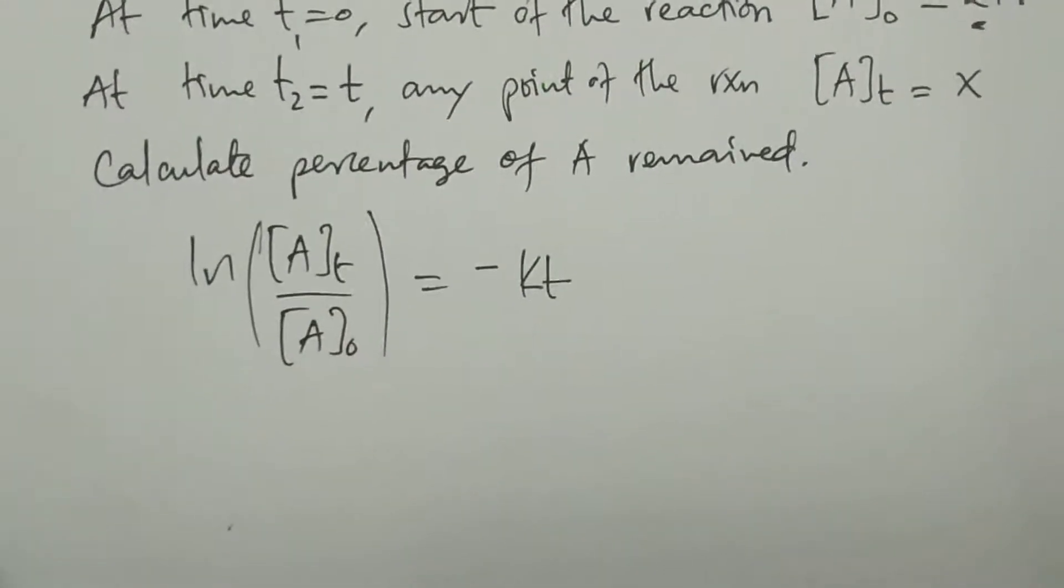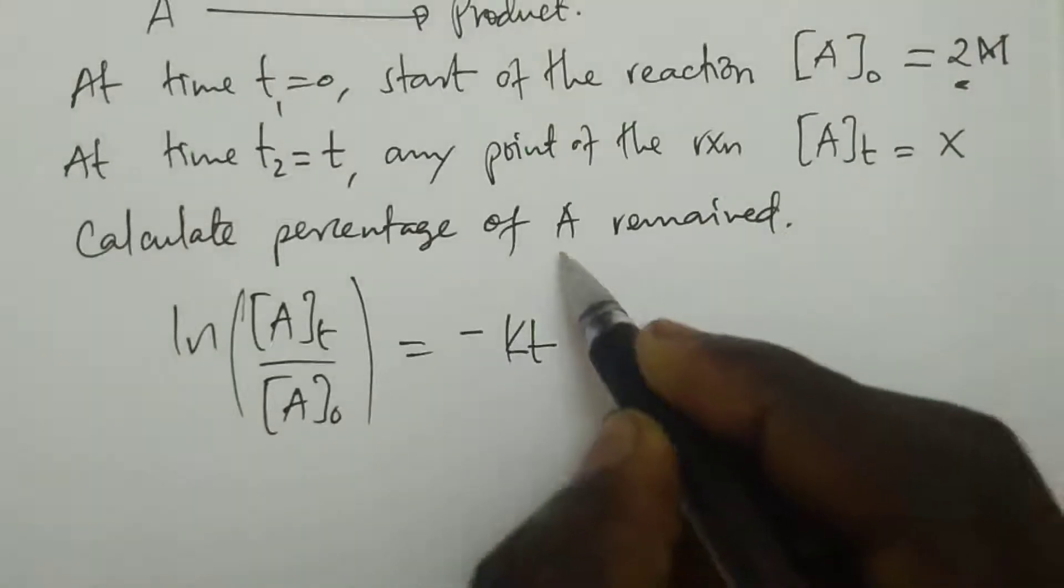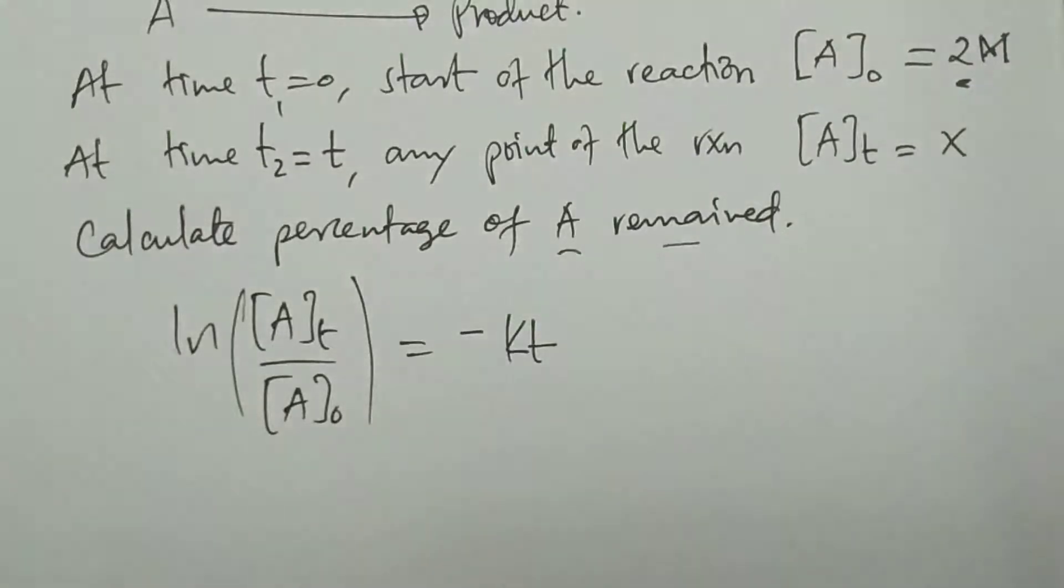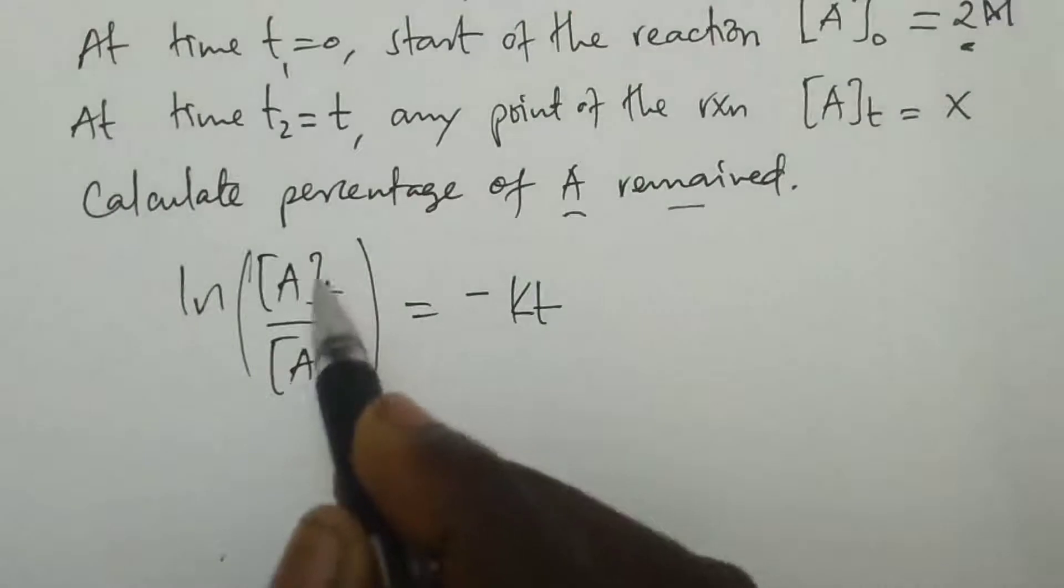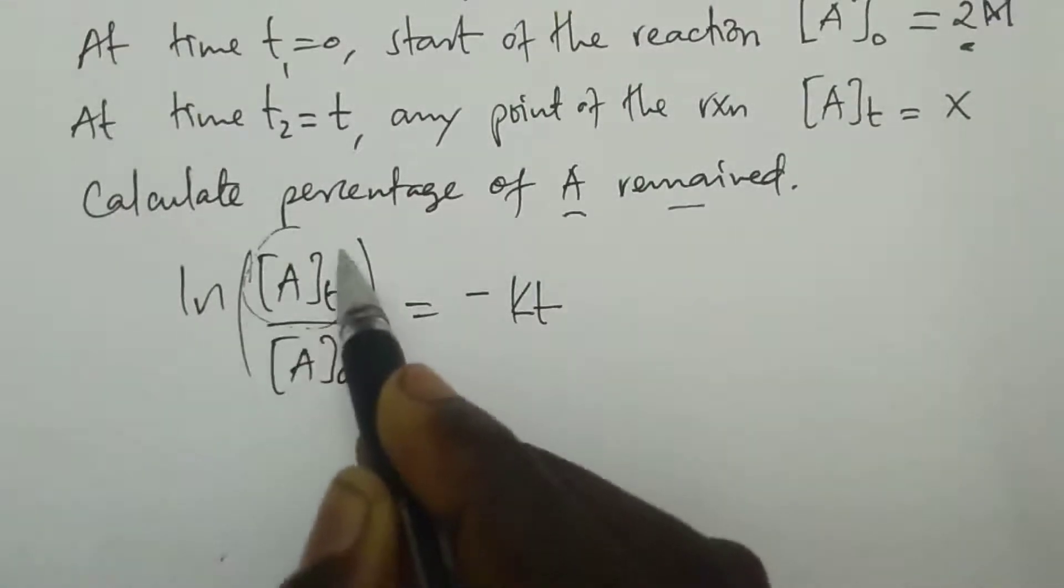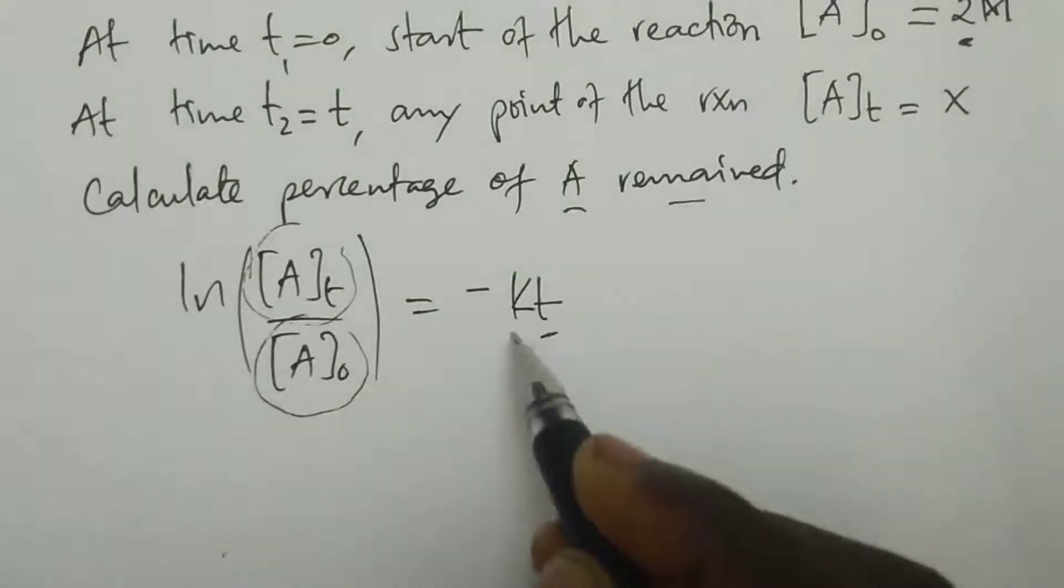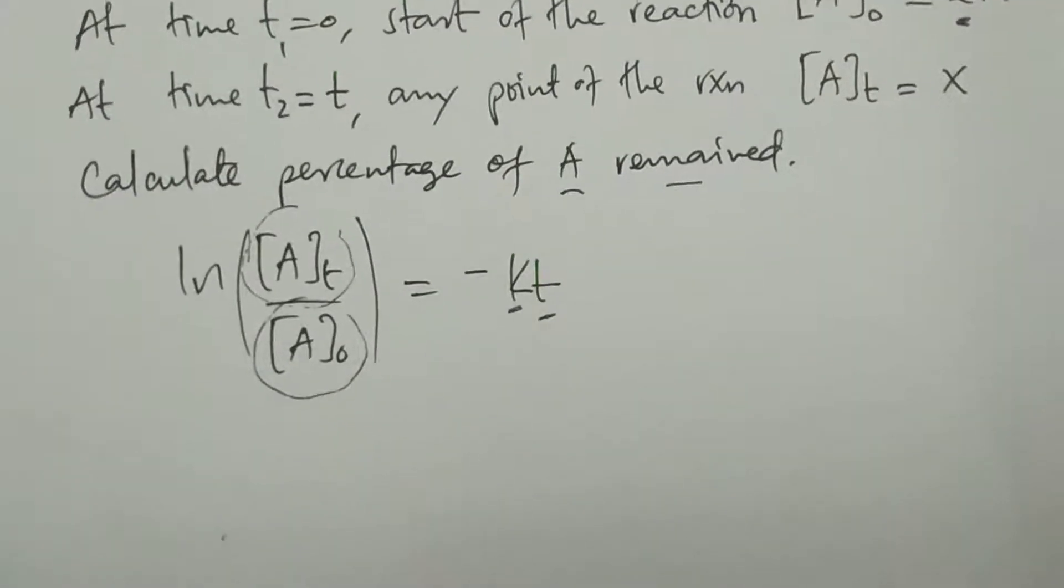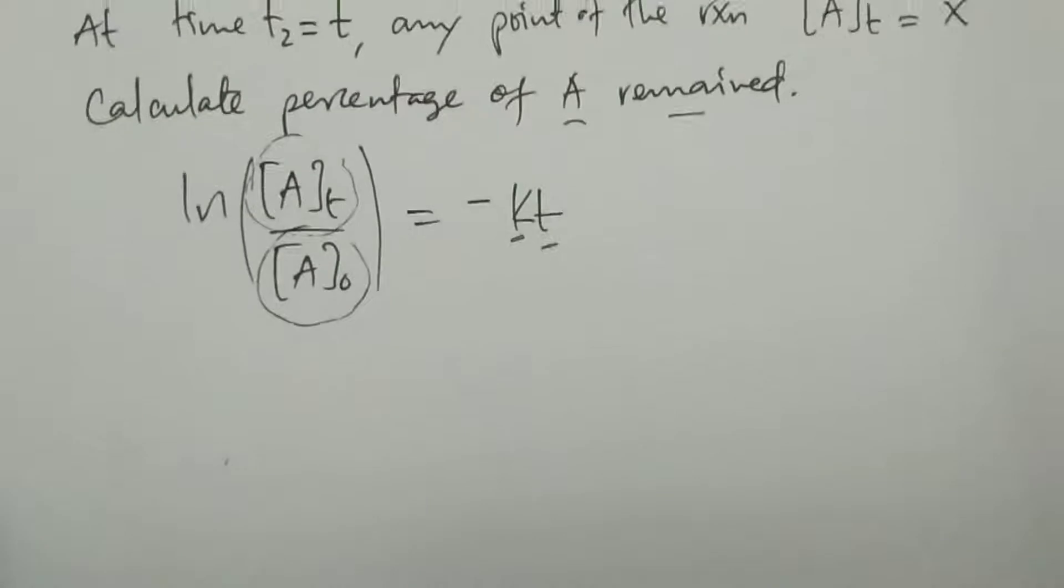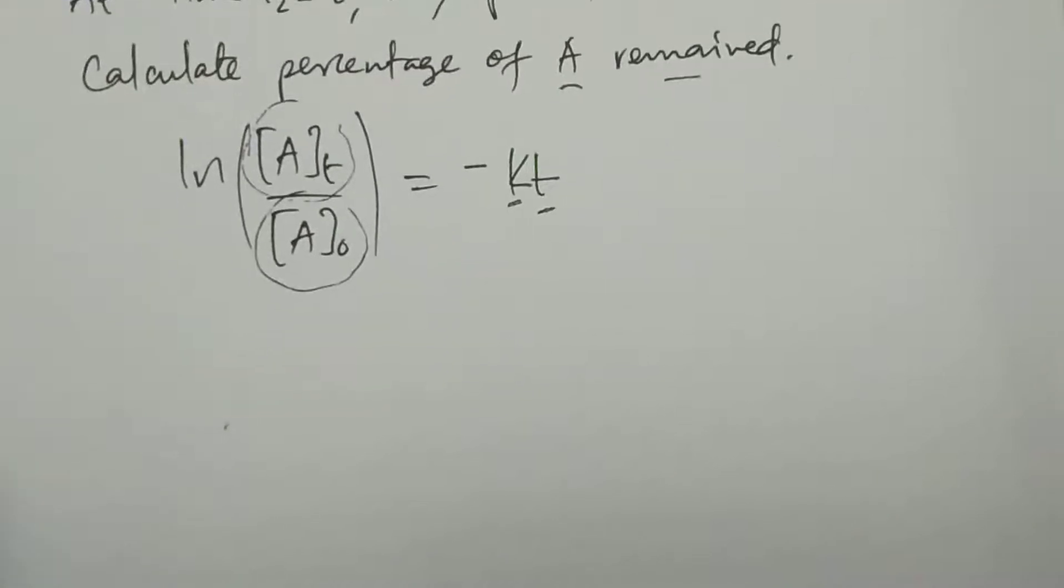If you're told to find the percentage of A remained, concentration AT is what remains after time T, concentration A₀ is the starting concentration, T is the time, and K is the rate constant which is given.